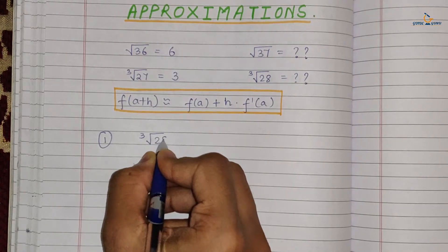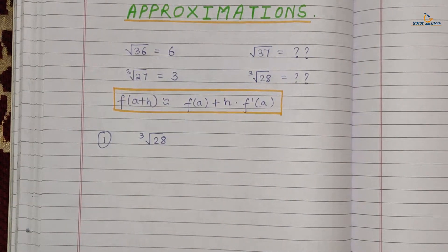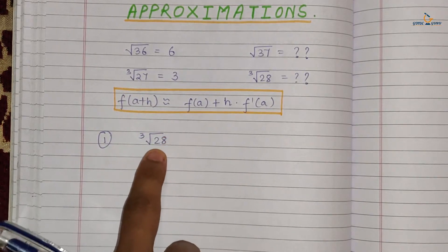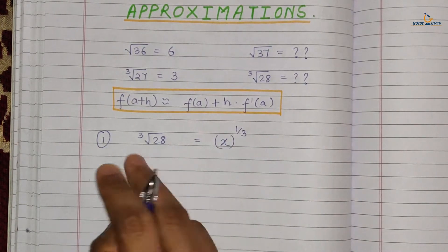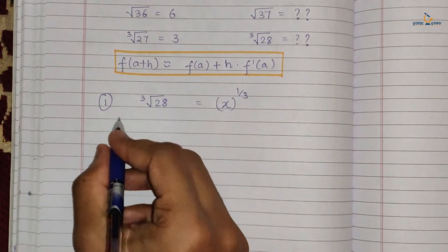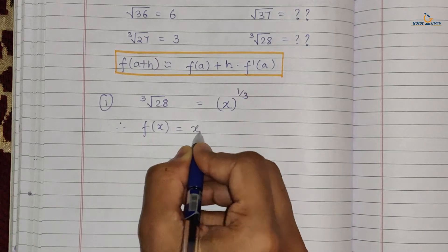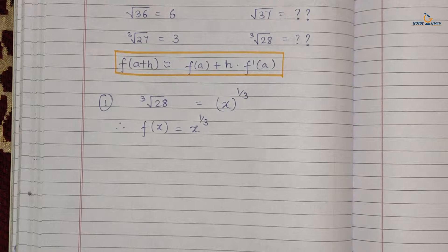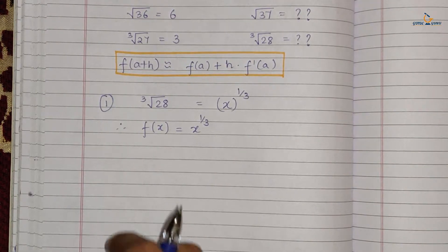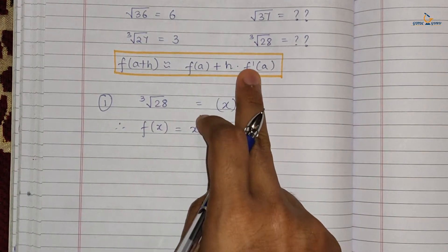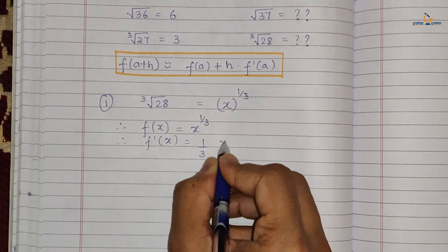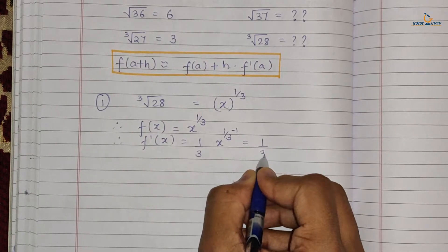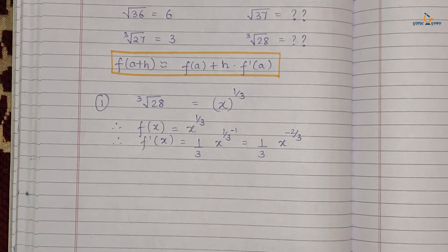The first question asks us to find the cube root of 28. We identify the function as f(x) = x^(1/3), since cube root is the same as raising to the power one-third. The derivative of this function is f'(x) = (1/3) · x^(-2/3).